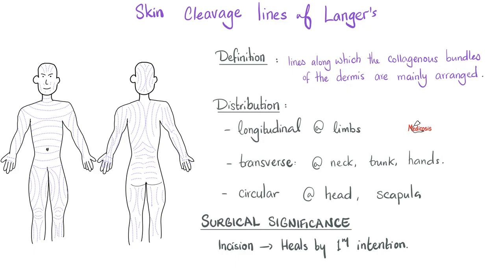As for their distribution: they are longitudinal in the limbs, except around big joints; they are transverse in the neck, trunk, and hands; and they are circular in the head and around the scapulae.